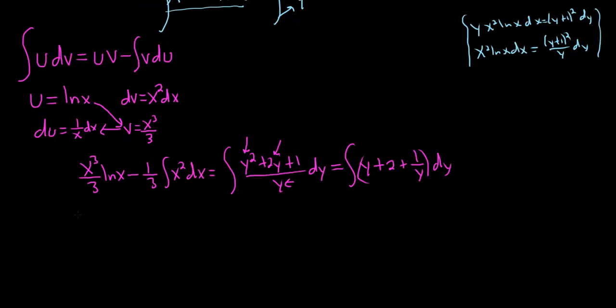All right, let's go ahead and finish this. This is x cubed over 3 ln x. When we integrate x squared, we get x cubed over 3. But there's a 3 here, so we get x cubed over 9, because 3 times 3 is 9. I almost messed up. I almost put a 2 there. It's x cubed over 9 equals.